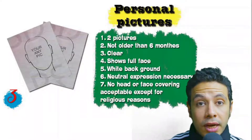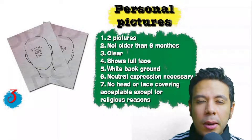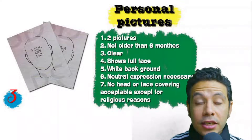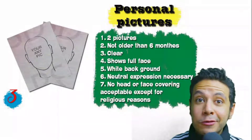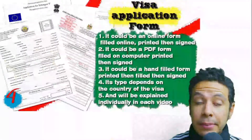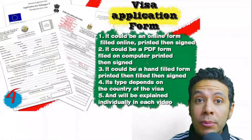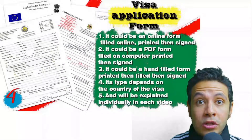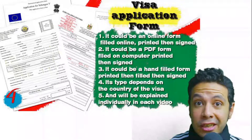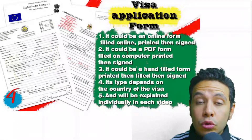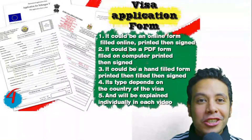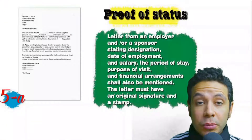For personal pictures, you need at least two photos — sometimes one or three are required. They must be recent (not older than six months), clear, showing your full face, preferably with a white background, and with a normal, neutral expression. No head or face covering is acceptable except for religious reasons. For the visa application form, generally one copy is needed, though sometimes two or three are required. Many countries now offer an online application platform — fill it out, print it, and sign it.